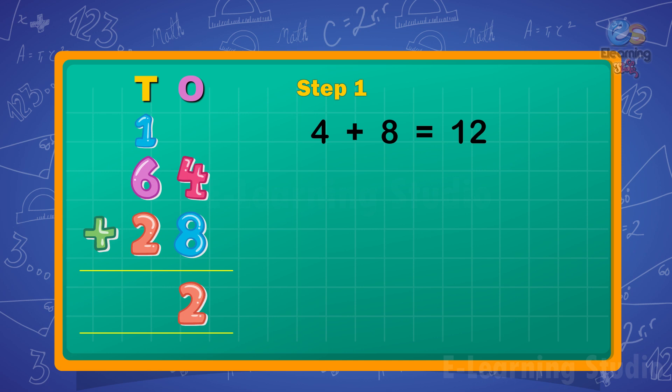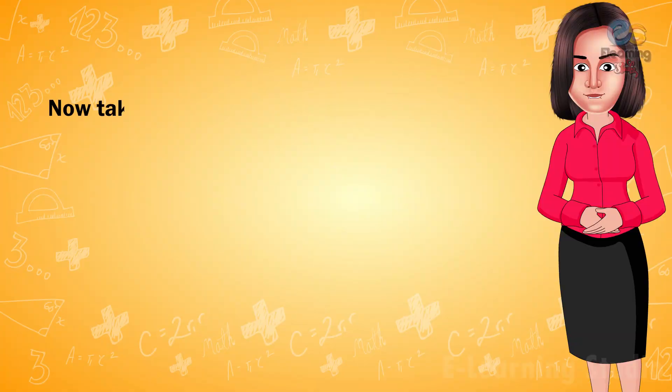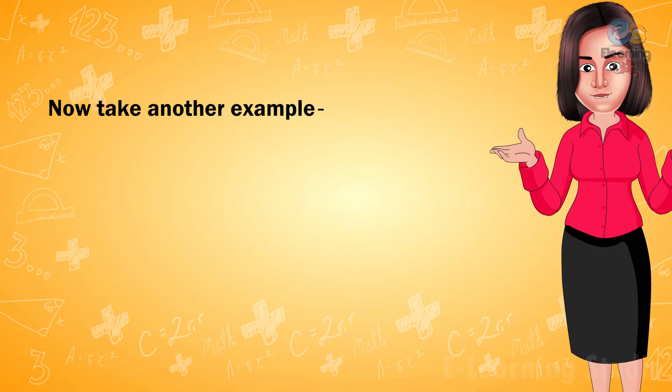Step 2: Next add the tens. 6 plus 2 plus 1 is equal to 9 tens. Write 9 under the tens column. Thus the sum is 92. Now take another example.